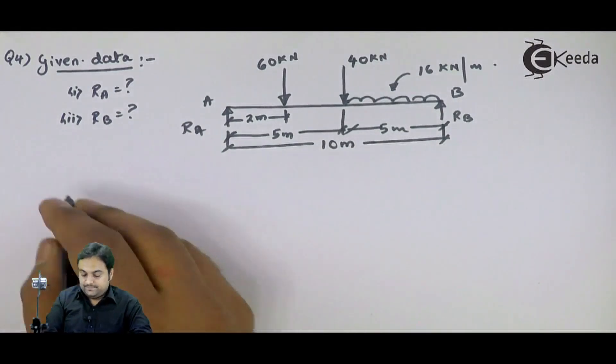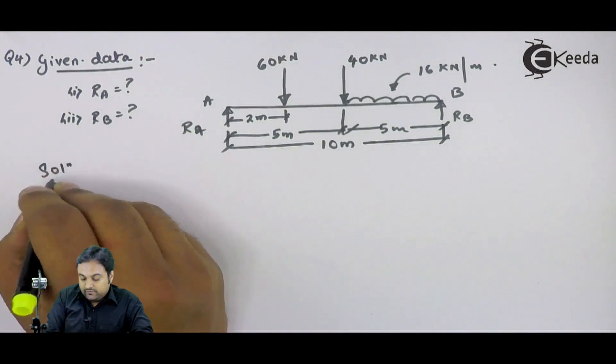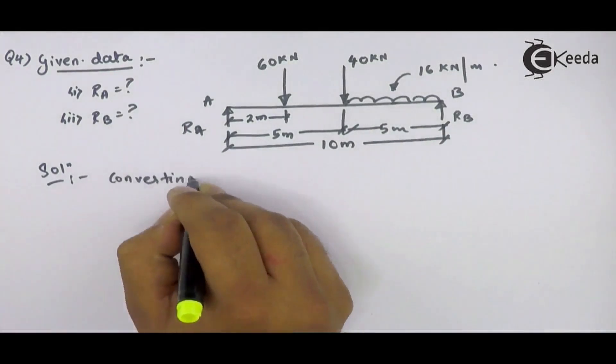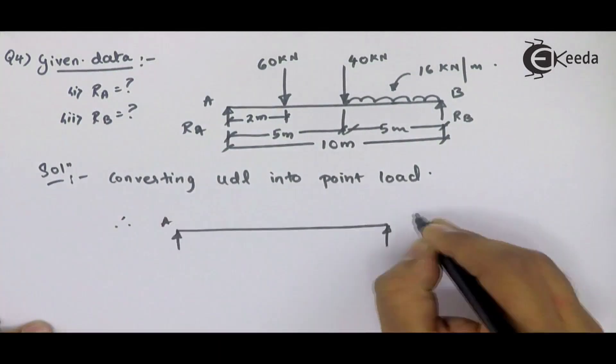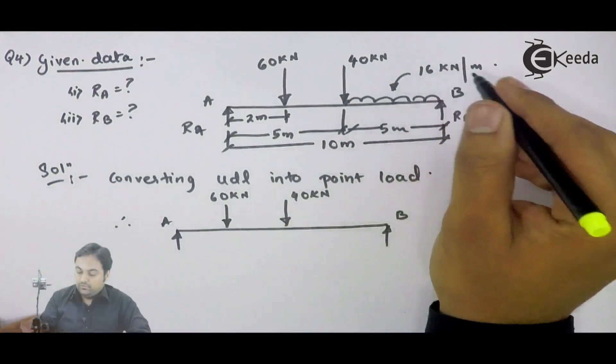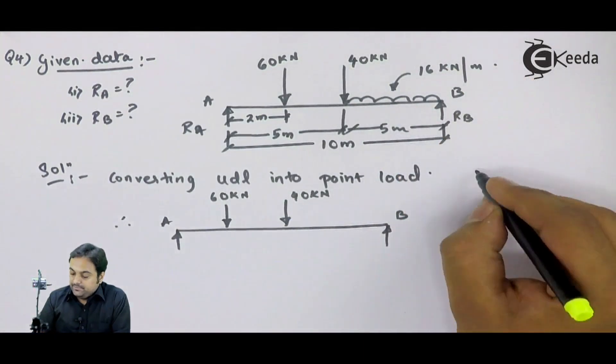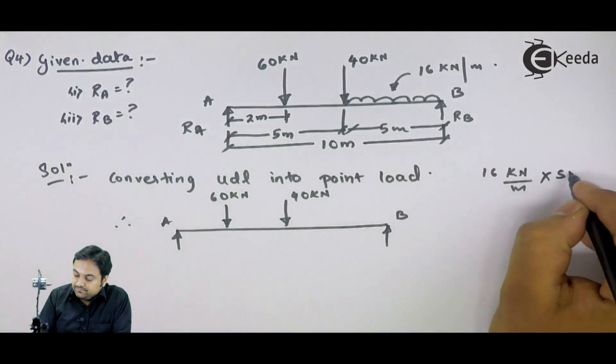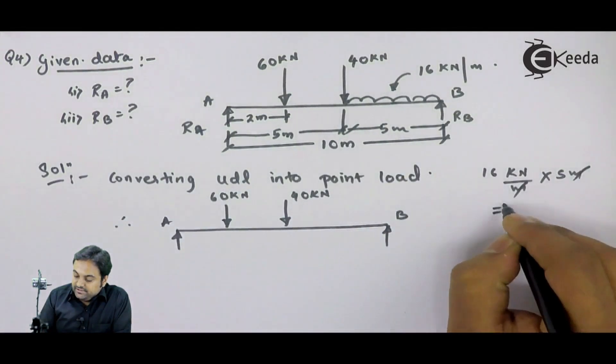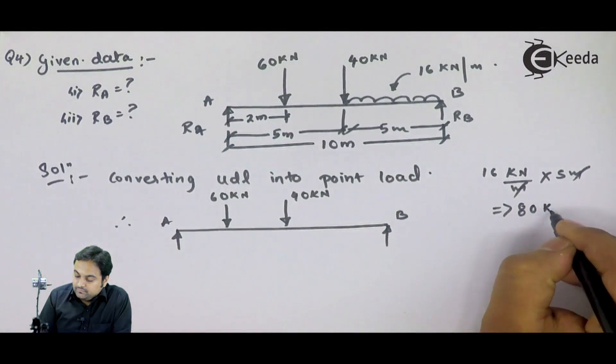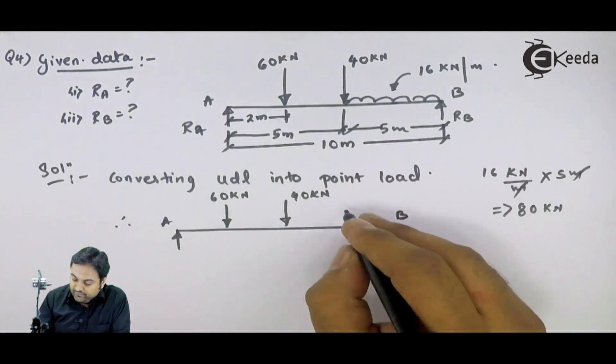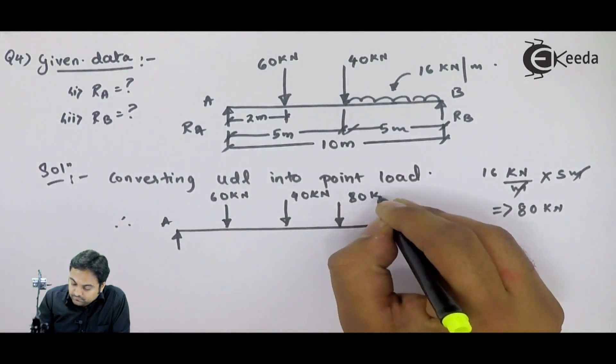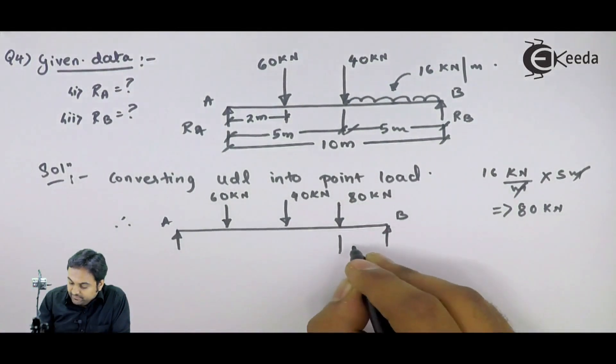I will say that solution: first convert this UDL into point load. UDL is 16 kilonewton per meter intensity acting at 5 meters. So that is 80 kilonewton acting at half of 5, that is 2.5 meters.